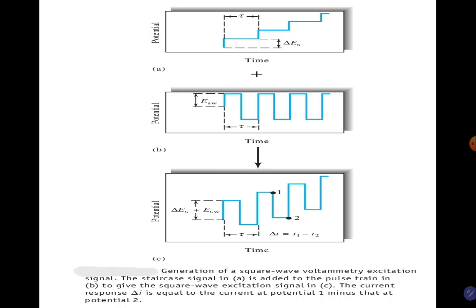The staircase signal is added to the pulse train to give the square wave excitation signal. So here, A and B are being added together, which gives us the square wave voltammetry excitation signal.